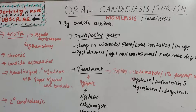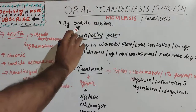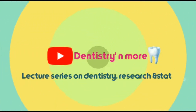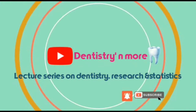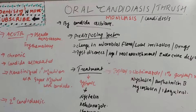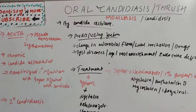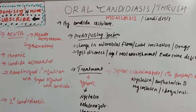Welcome to another session in dentistry and more. Today we have oral candidiasis, or oral thrush, which is also known as moniliasis or candidosis. Moniliasis is an older name; it is now known as candidiasis because it is caused by Candida albicans. There are other organisms also causing this infection, such as Candida tropicalis, Candida fermata, and Candida cruzi.